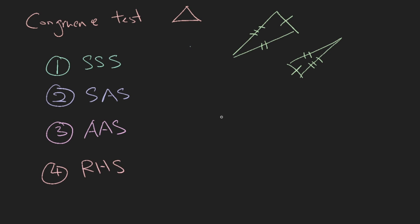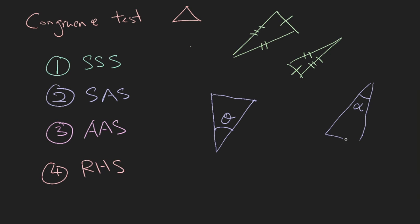The second rule is SAS: two sides and the angle in between. If you can find another triangle that has the exact same length for two of its sides and the exact same included angle — for example, this side equals this side, this length equals this, and theta equals alpha — then the two triangles are congruent. The angle must be the included angle between the two sides.